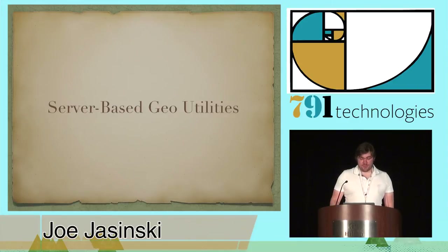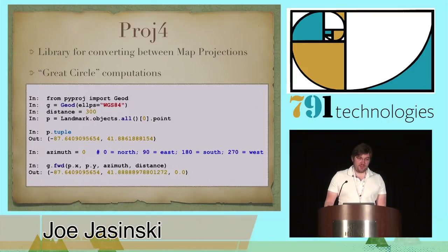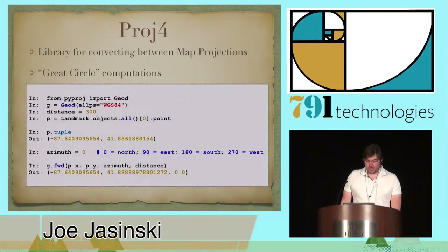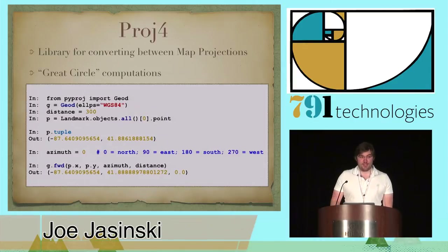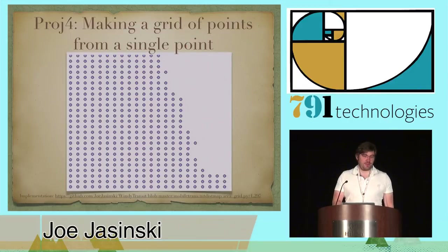I'd like to talk about server-based geo-utilities. The first is the Proj4 library, which is a dependency for GeoDjango and is responsible for converting between different projections. The SpatialRefSys table in PostGIS also has a Proj4 text column, which stores a projection definition in Proj4 format used for map projection conversions. I've also used PyProj, a Python wrapper for Proj4, to translate points on a map. In my particular use case, I filled a shape with evenly spaced points by transforming a single point in multiple directions — I used this for generating source points to create a heat map.